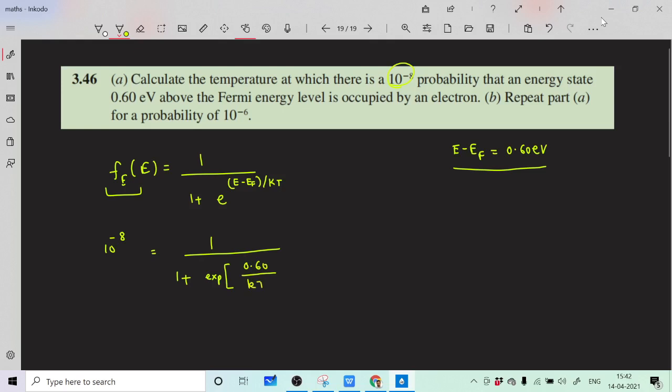Let us cross multiply everything. This implies 10 to the minus 8 plus 10 to the minus 8 exponential 0.60 upon kT, and this is equal to 1.